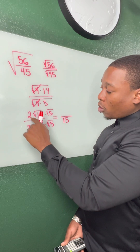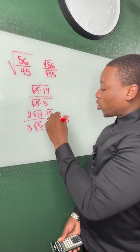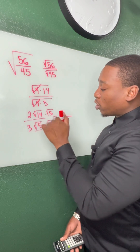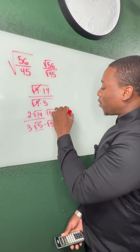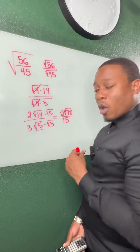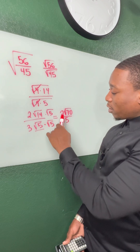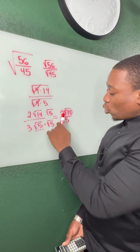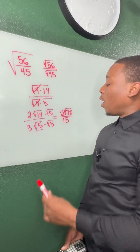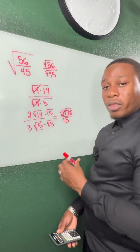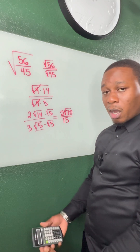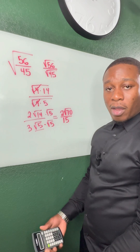Now on the top, we have nothing to multiply 2 with, so 2 stays the same, and then we multiply radical 14 and radical 5 to get radical 70. When we look at this fraction, we can't simplify 2 and 15, so those stay the same. And when we look at our radical, this is going to be the final answer because we cannot break that radical down anymore.